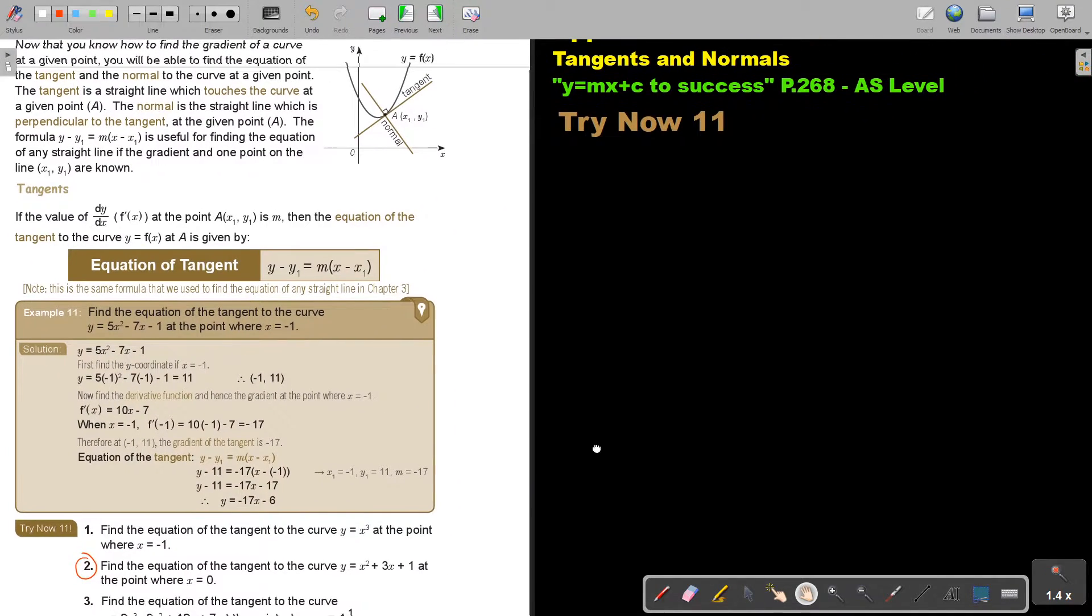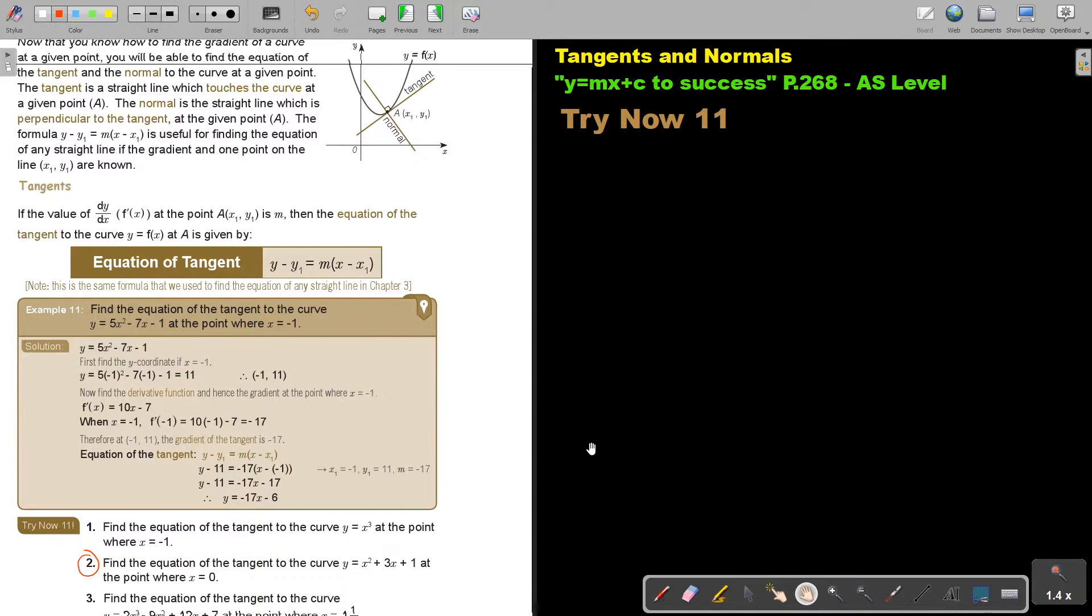All right, try now 11, and it's number two. So let's write down the function number two. Y is equal to x squared plus 3x plus 1, that's the formula. Now we are going to start from the front equation of the tangent at the point where x is zero. So let's do it exactly the same as the example. First find the y coordinate.